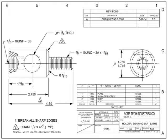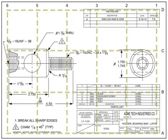Most drawings are broken out into zones using a simple alphanumeric grid. This grid is critical for large, complex drawings when discussing changes or details. The grid helps drafters and engineers pinpoint where information is located.